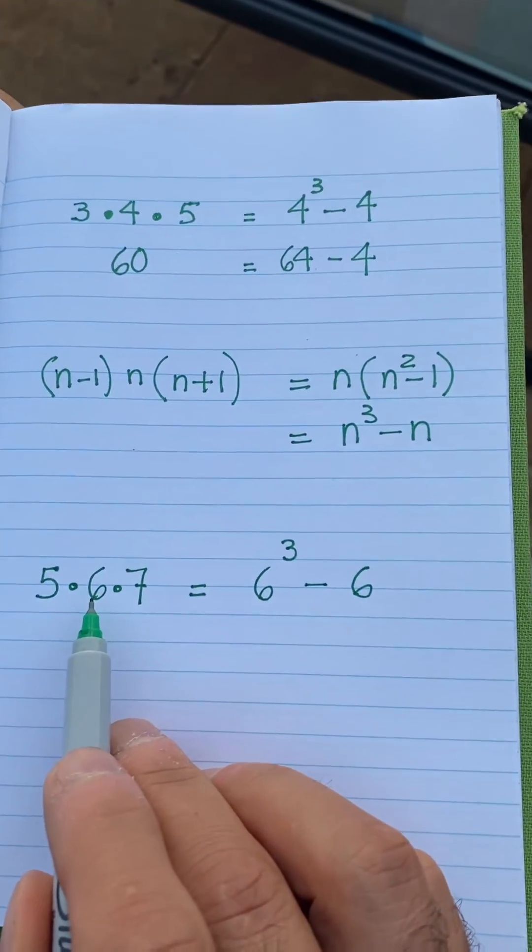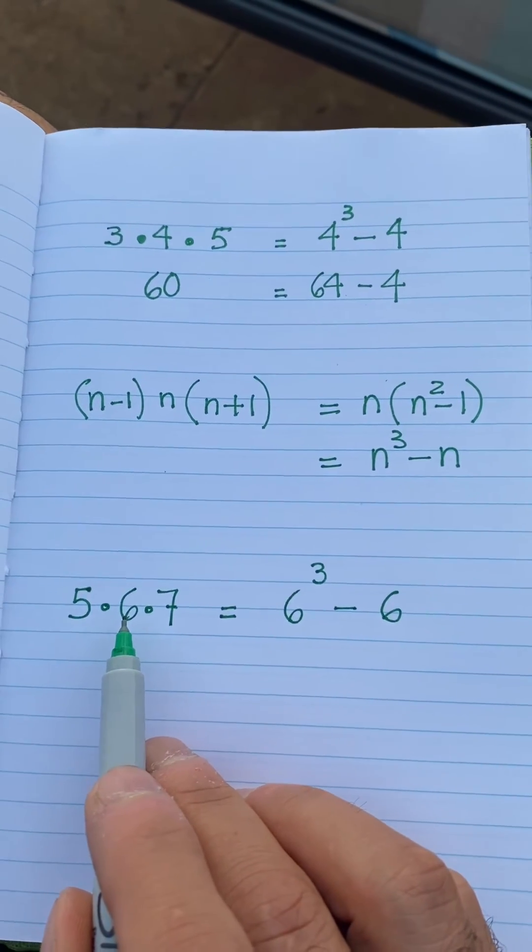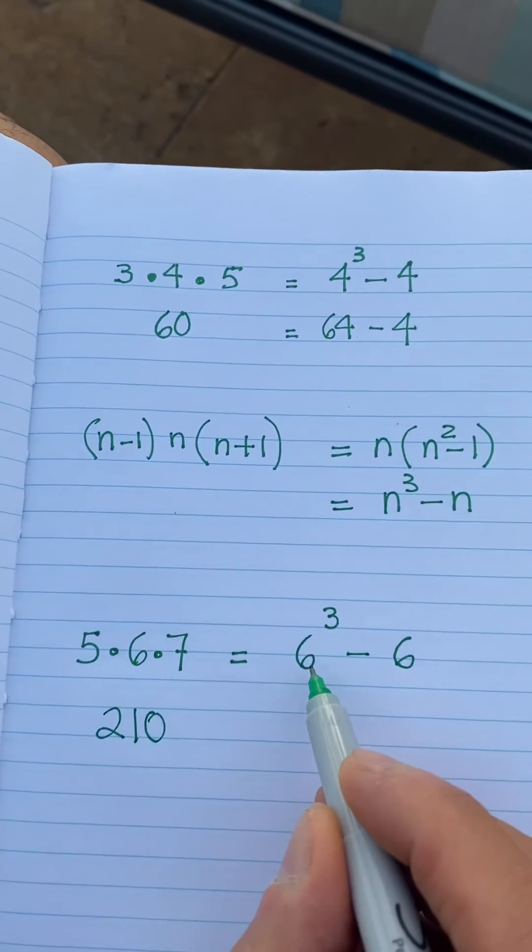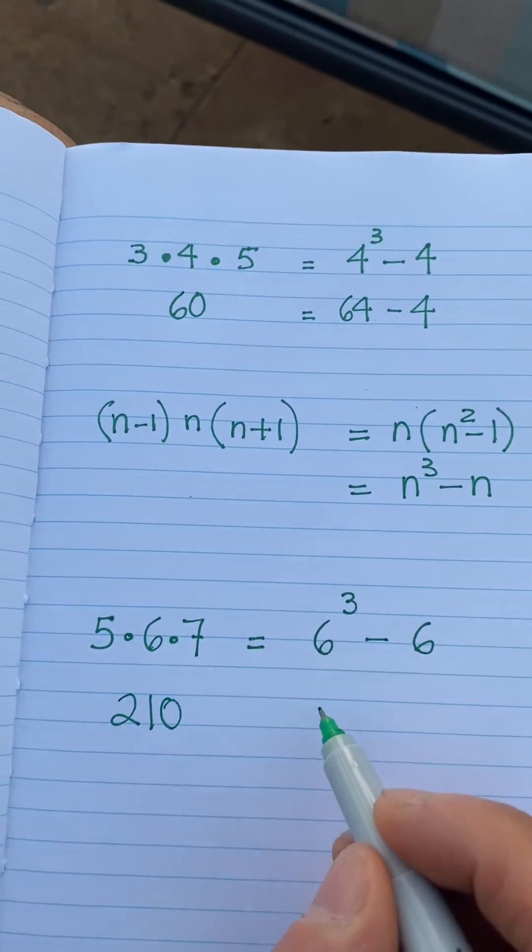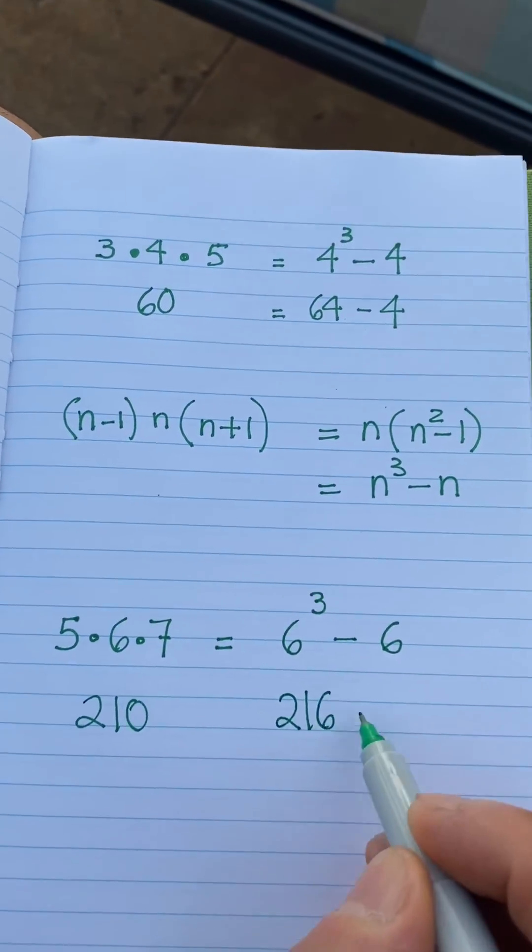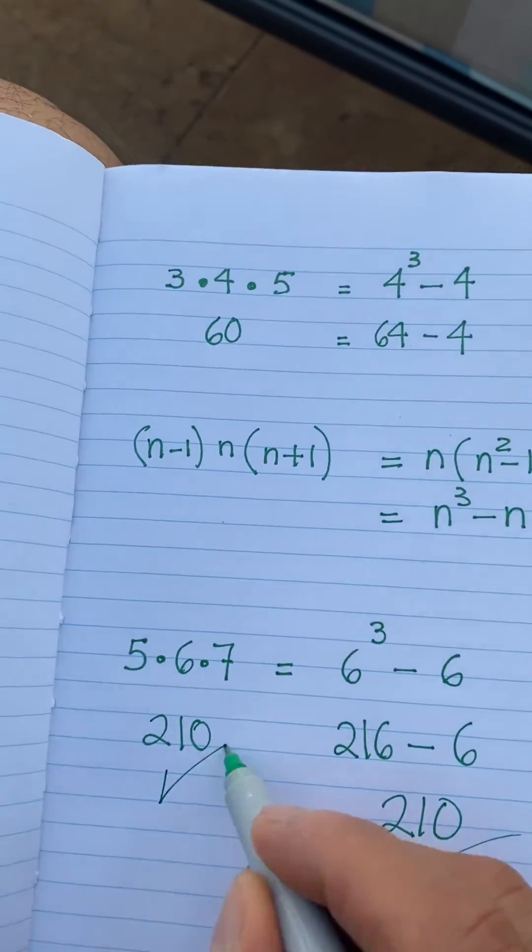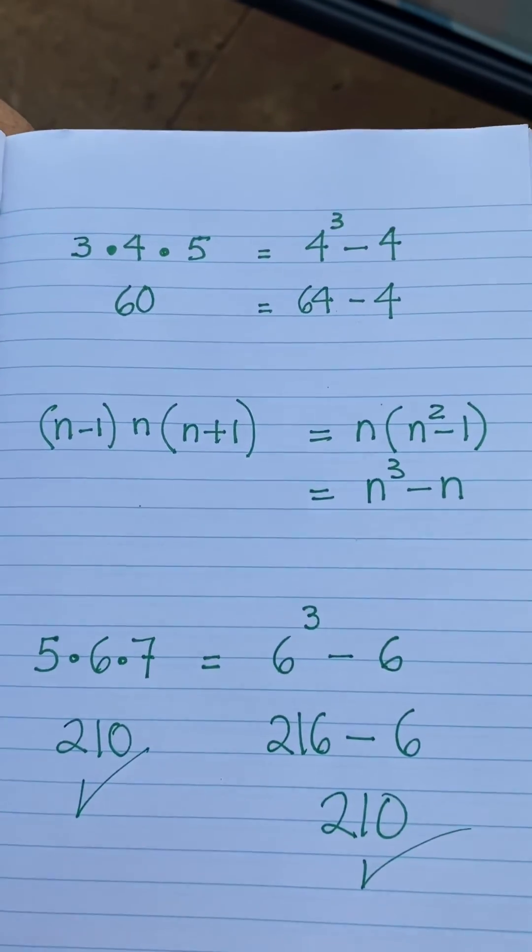5×6 is 30. 30×7 is 210. What about now? 6×6×6, that's 216 minus 6, which is 210. Again, 210 and 210. It's all just beautiful math.